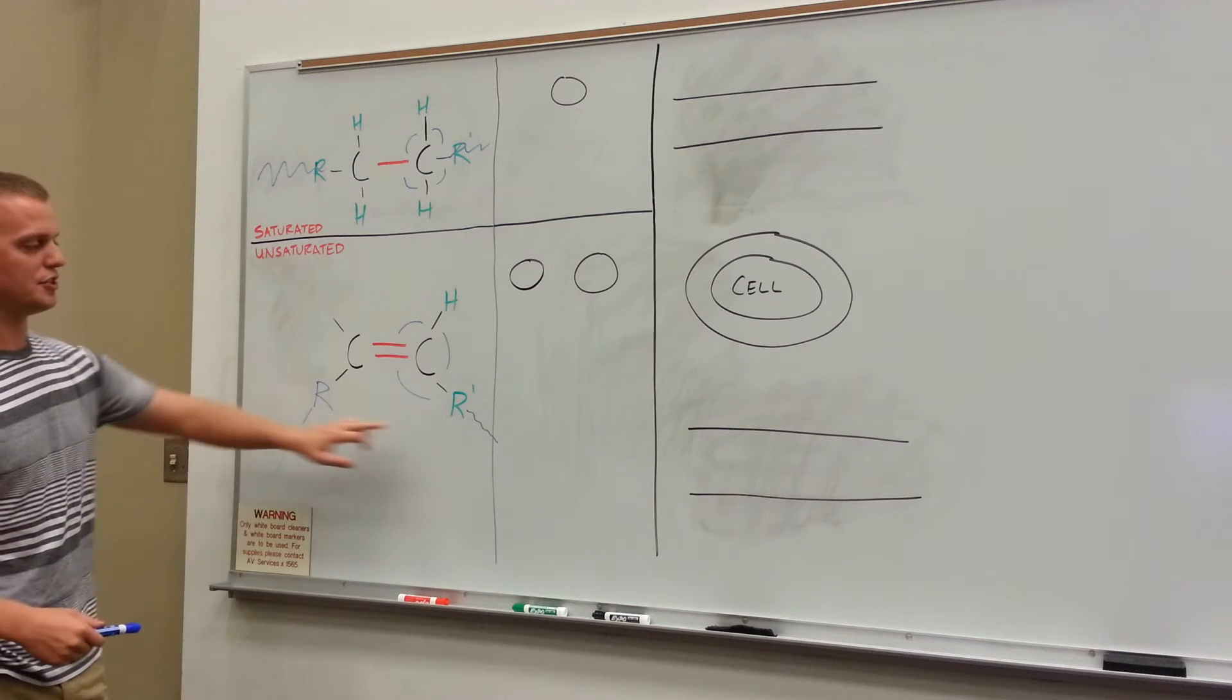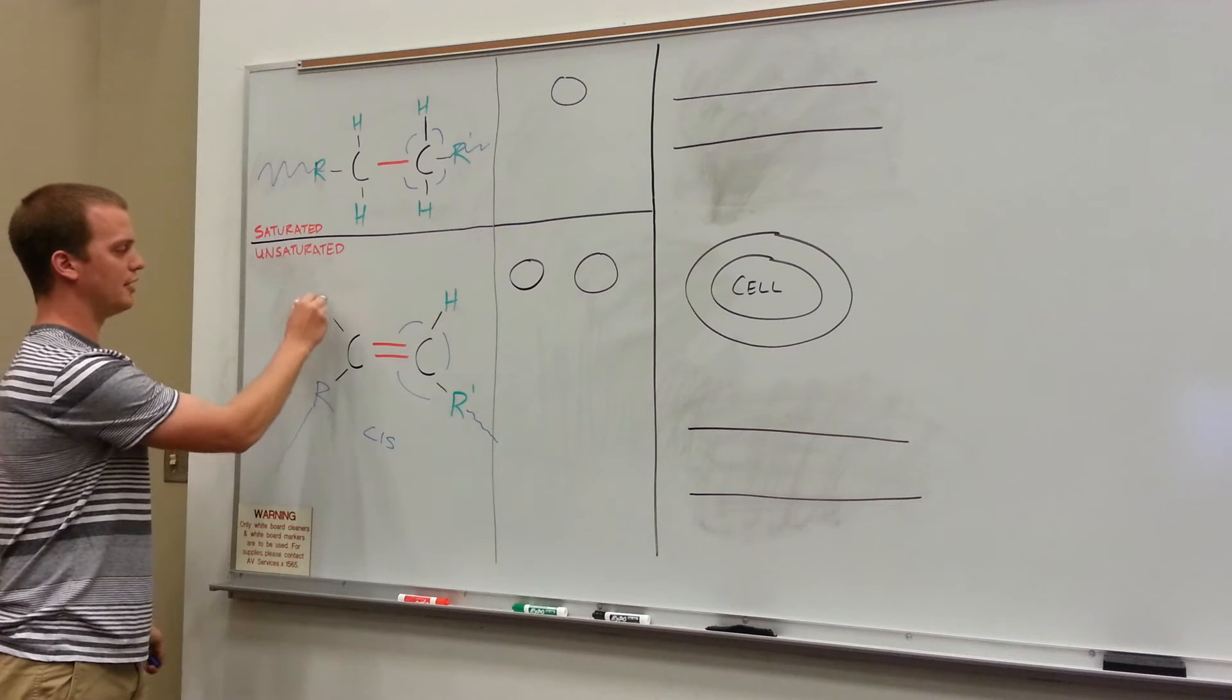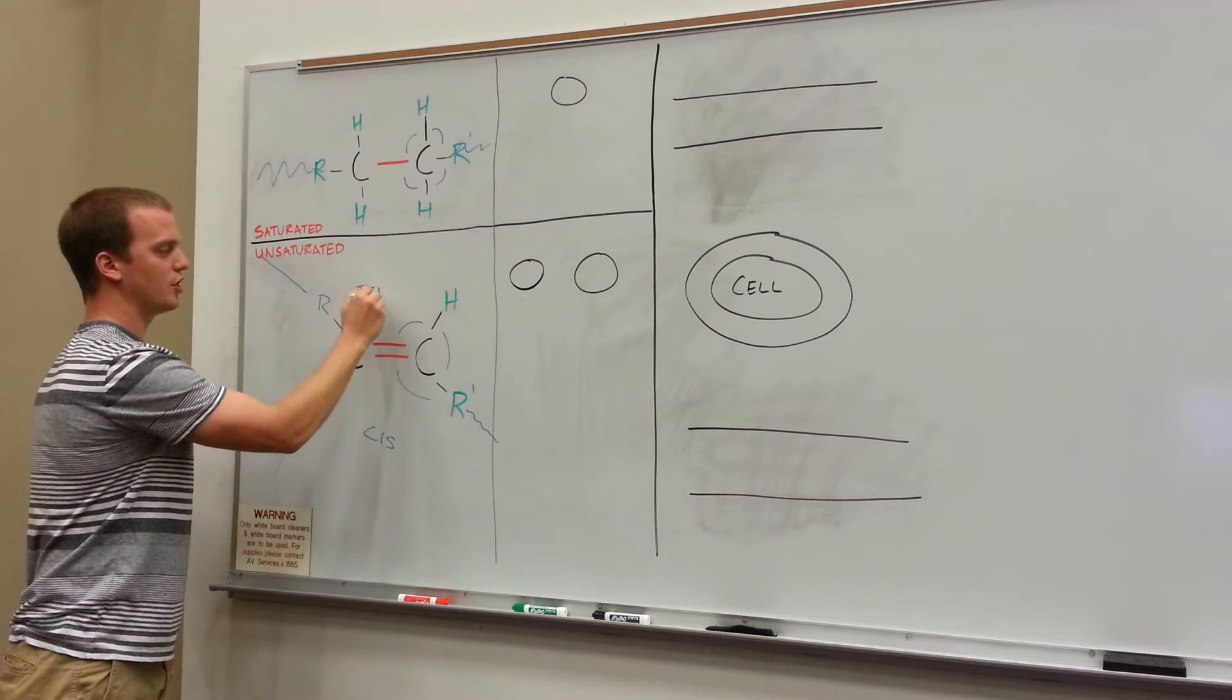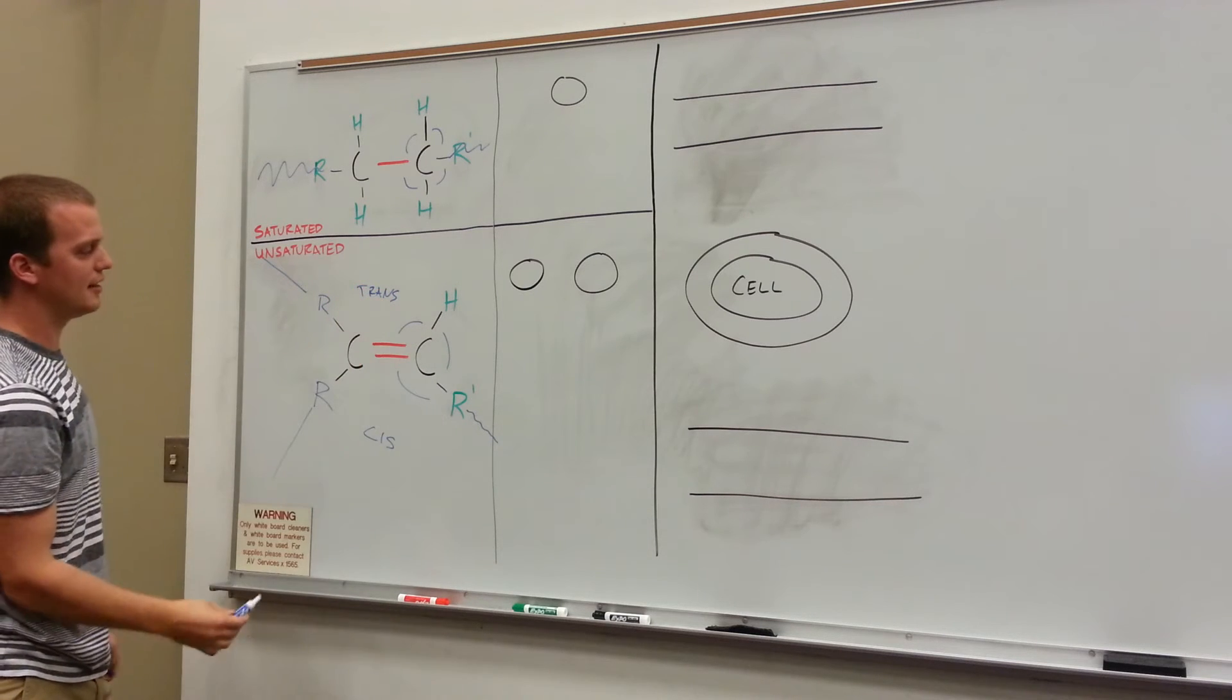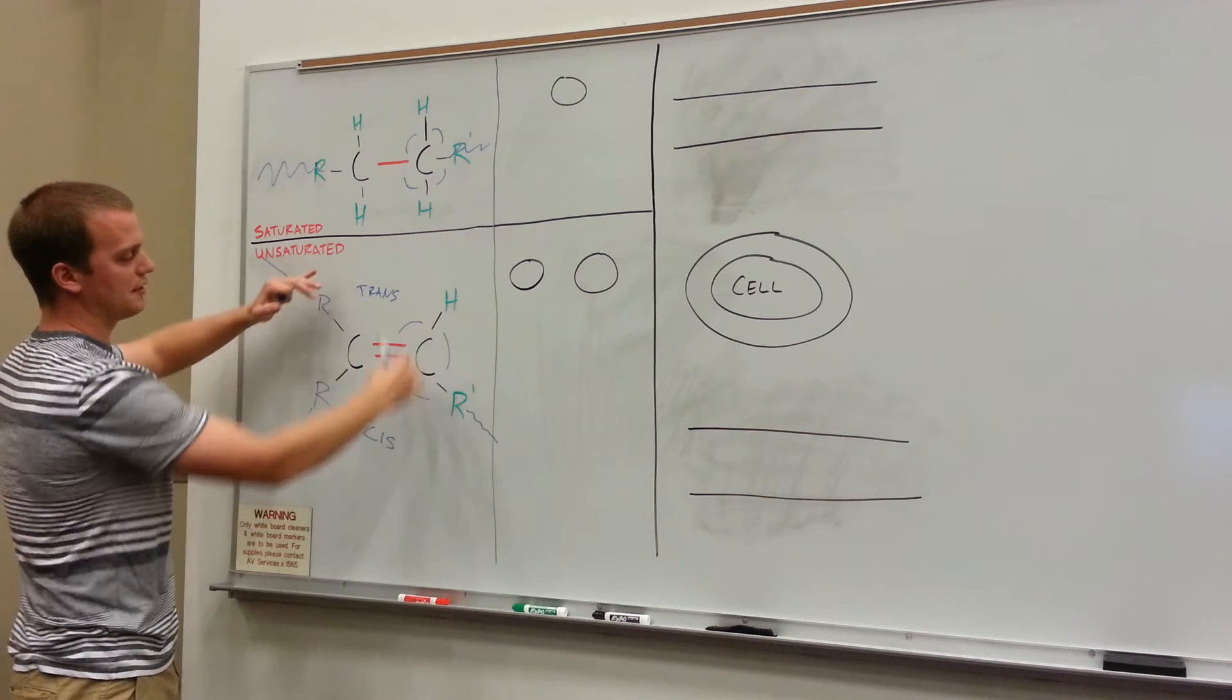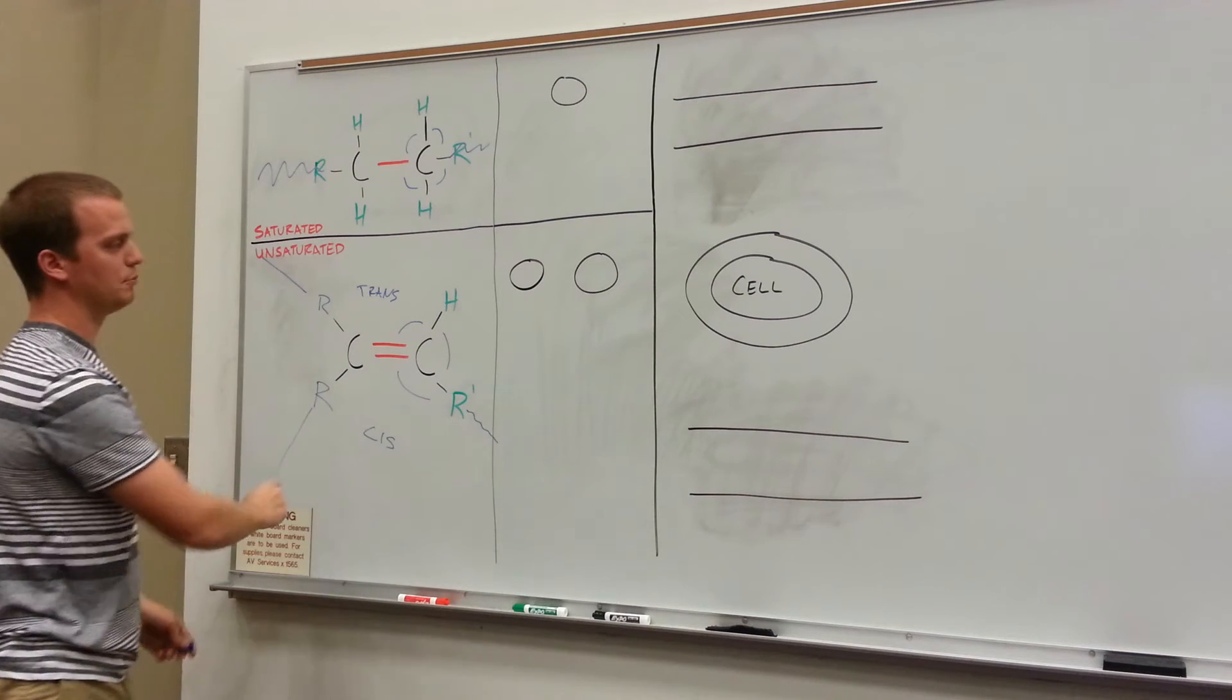This configuration where these R's currently are is called cis. Now if the R was up here and this is pretty linear, this is called trans. Meaning that these R's are on opposite sides, one way to think of the opposite side of the double bond. Basically think of it that trans is more linear, cis is more like a boomerang.